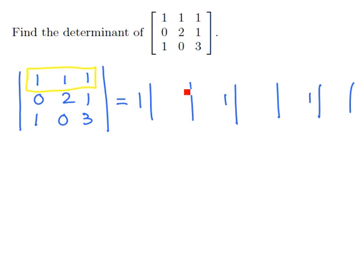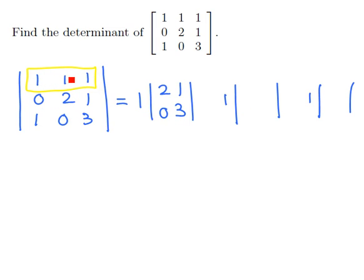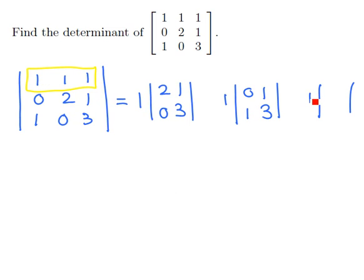These sub-determinants are going to be found by crossing off the columns and rows that contain the individual 1. For this first one, we cross off the row and column containing the first 1 to get the submatrix 2, 1, 0, 3. For this second one, we'll cross off the row and column that contains the second 1 to obtain the submatrix 0, 1, 1, 3. And for the third one, we'll cross off the row and the column that contains that third 1 to get the submatrix 0, 2, 1, 0.